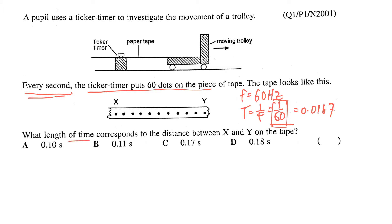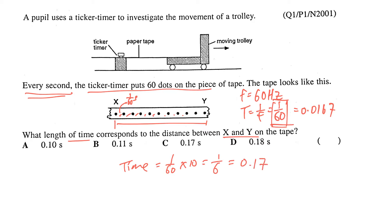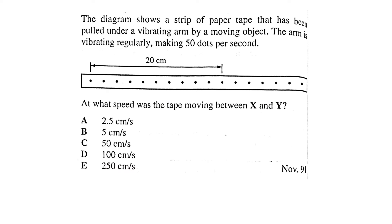To find the length of time to move a distance between X and Y, each interval is 1/60 of a second. Counting the number of intervals between X and Y, there are 10 intervals, so the time taken is 1/60 times 10, which is 1/6. Rounded to 2 significant figures, that's 0.17 seconds, so the answer is C.